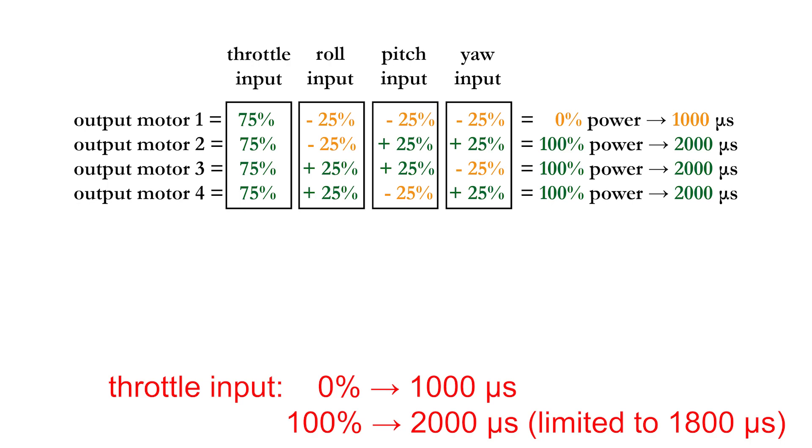In your flight controller code, the throttle input will vary between 1000 and 1800 microseconds, to leave 20% motor output available at all times for rolling, pitching, and yawing.